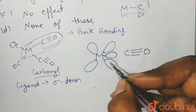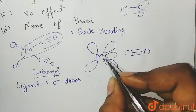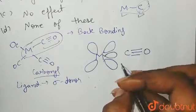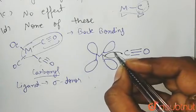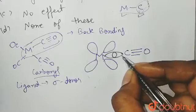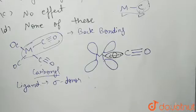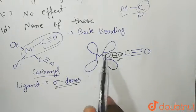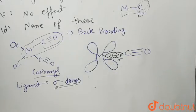The metal could have an empty p orbital or an empty d orbital. The carbonyl will donate its sigma electrons to the metal's empty p or d orbital to form a sigma bond. This is the sigma bond that forms, because the carbonyl is a sigma donor — it donates electrons to the metal's empty p or d orbitals.